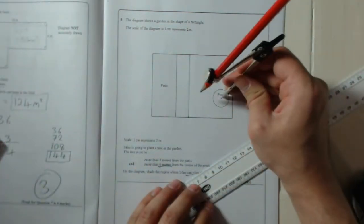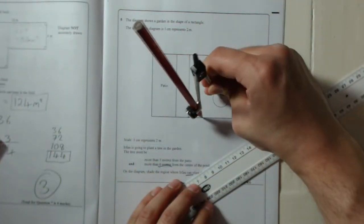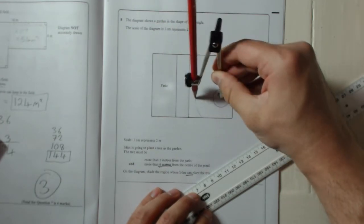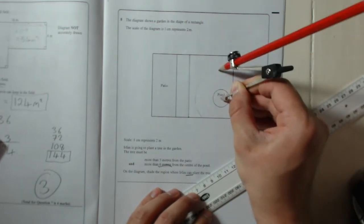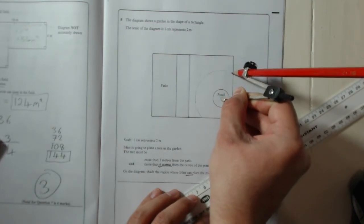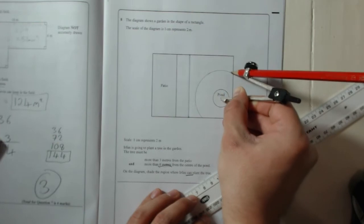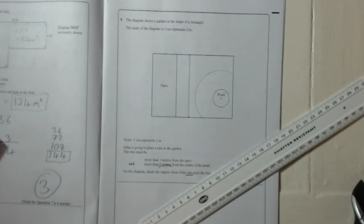And then, stick it into the centre of the pond, and draw the circle, or the curve, for the inside of the garden. No point going outside. So there it is. Like that. OK. So now,